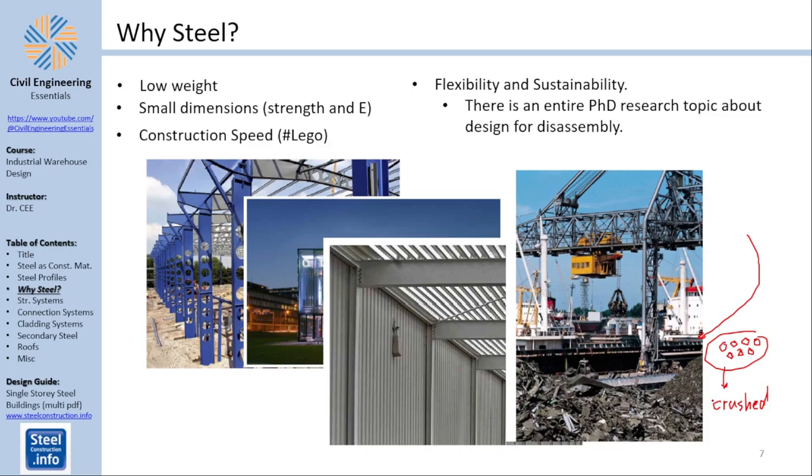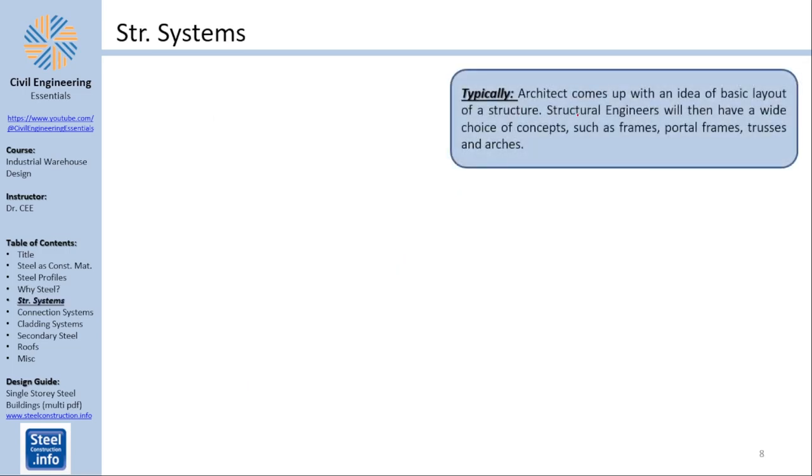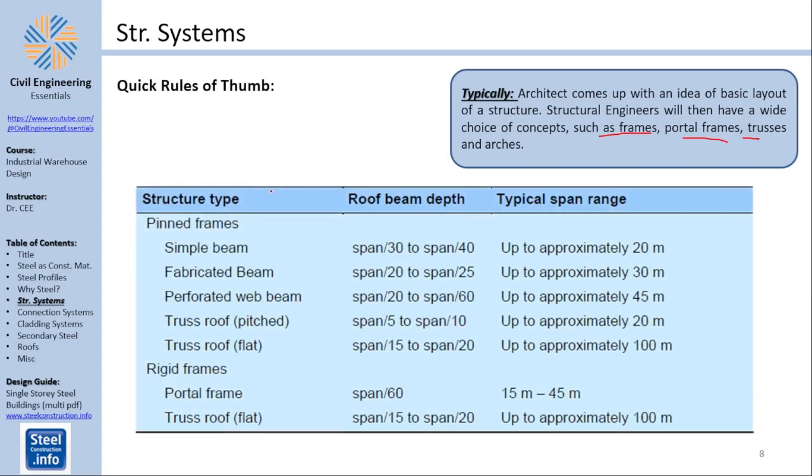Structural systems. Typically architects come out of a basic idea of a layout and structural engineers try to make this happen by using frames, portal frames and trusses. There are quick rules of thumb that might be interesting here. For example if you have a pinned frame with simple beams your roof beam depth are limited to span over 30 and span over 40 with typical span ranges up to 20 meters. Trusses are the most OP of them all spanning as much as 100 meters. Portal frames being okayish spanning between 15 to 45 meters. We are going to focus on using portal frames because our video series in Robot is going to be using portal frames.